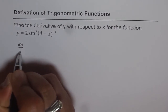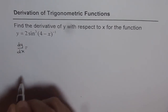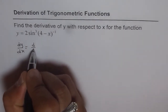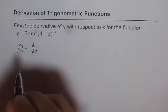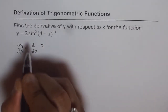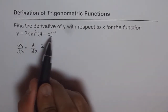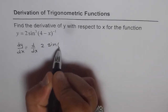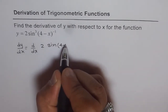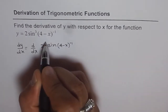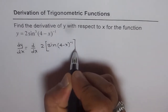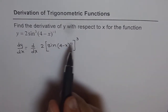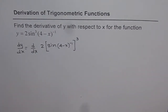If I differentiate both sides with respect to x, the first step is to write dy/dx for these terms. Let us be clear what this term looks like. You can write this as sin of the angle 4 minus x to the power of minus 1, all cubed. I am writing it this way so that you can use the power function very clearly and see how to apply it.